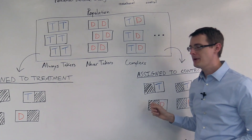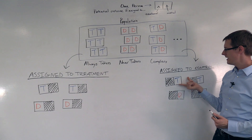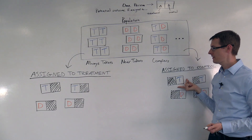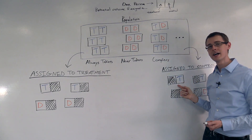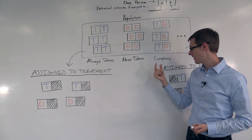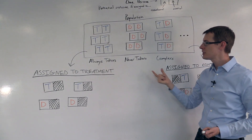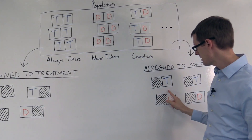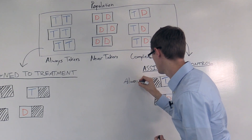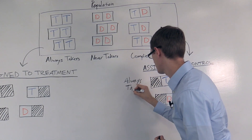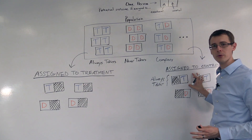Now, let's think about what kinds of people these people are. Let's think about the control group. This person is assigned to the control group but actually got treated. That means they can't be a complier, because a complier would not have gotten treated. They can't be a never-taker, because a never-taker never gets treated. So they must be an always-taker. This person here and this person here must be an always-taker. So these two people — they're always-takers.